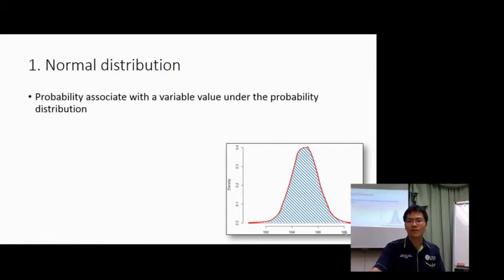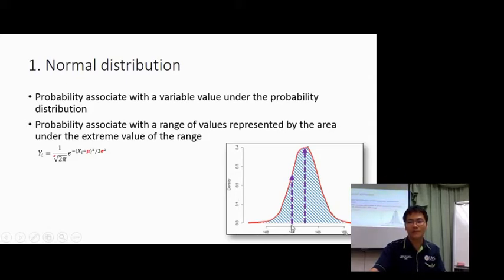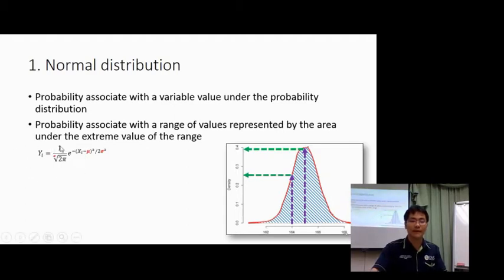The probability associated with a variable value under the probability distribution is also associated with a range of values, represented by the area under the curve between the extreme values of that range. For example, if I ask what is the proportion or probability of a student having a body height between 164 and 165 — that is an interval estimate. You can calculate it using the formula: the area under the curve gives you the probability, and if you multiply by the sample size, you get the frequency.